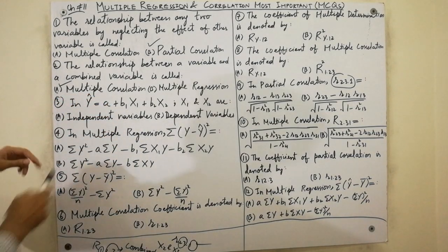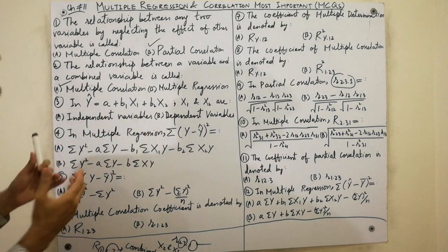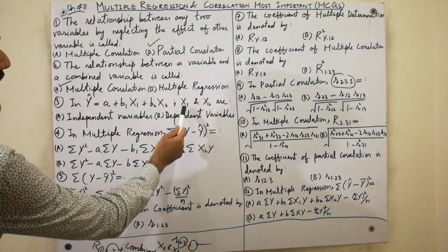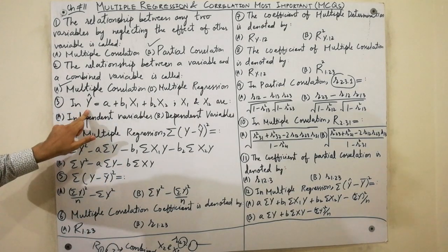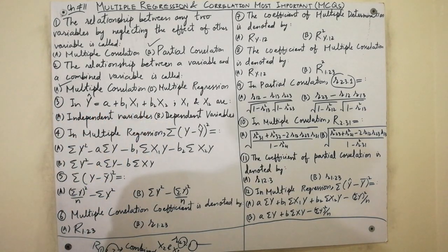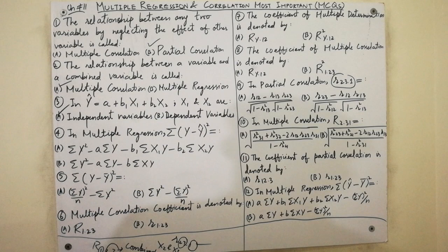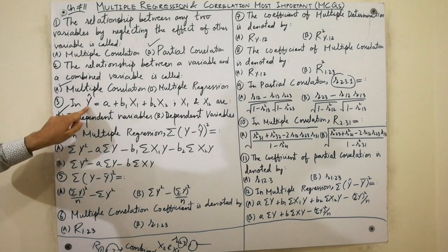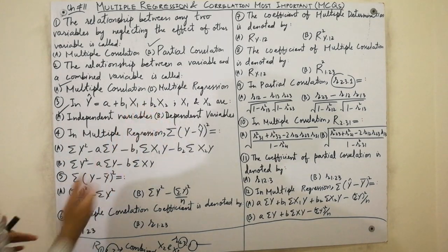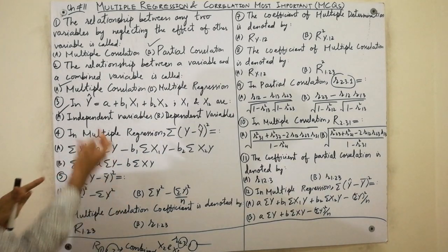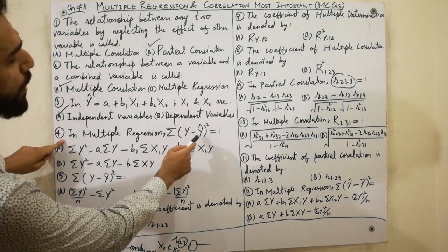In the multiple regression equation y-hat = a + b1·x1 + b2·x2, what are x1 and x2? We know that y-hat is the dependent variable, and x1 and x2 are the independent variables. x1 and x2 are independent because they do not depend upon y-hat.